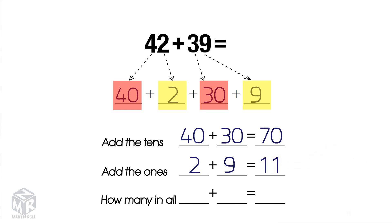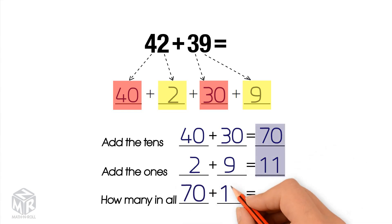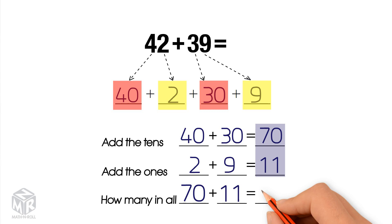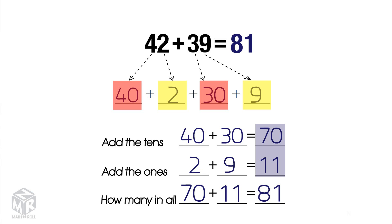Finally, we add them together: 70 plus 11 equals 81. So 42 plus 39 equals 81.